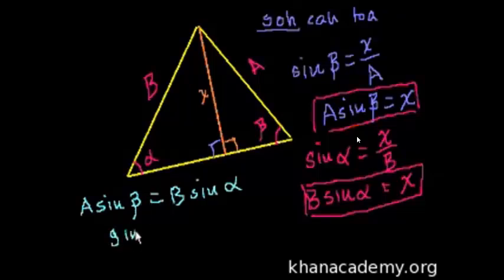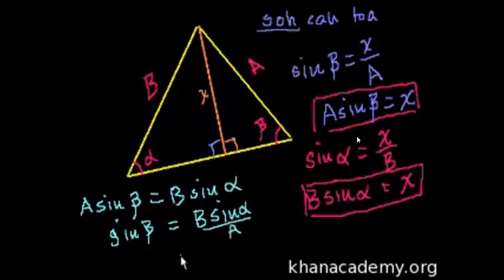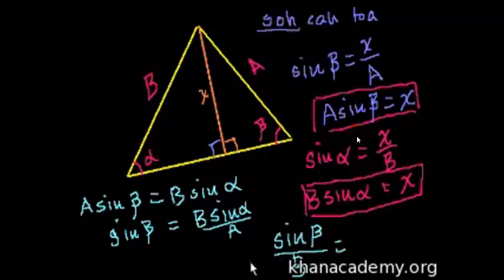We get sine of beta, because the A on this side cancels out, is equal to B sine of alpha over A. And if we divide both sides of this equation by B, we get sine of beta over B is equal to sine of alpha over A.